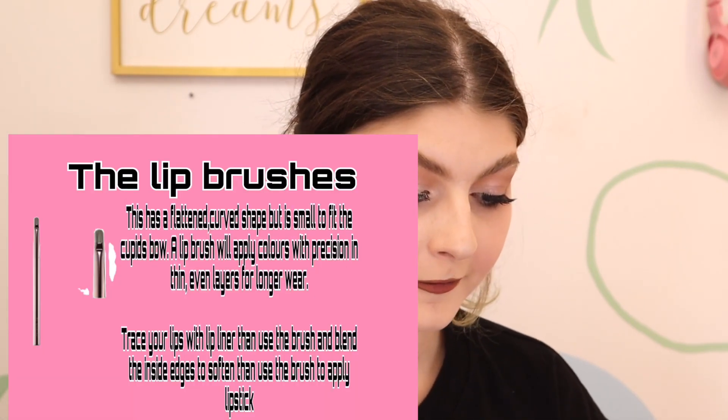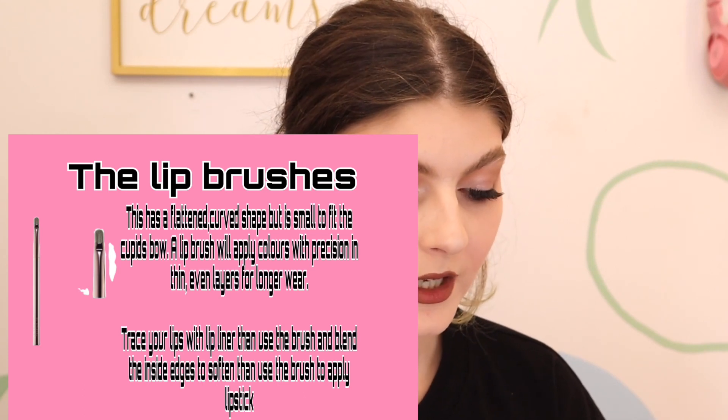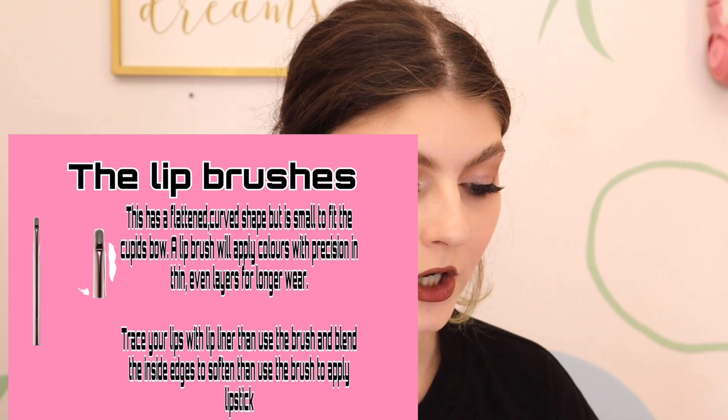The lip brush has a flattened, curved shape but is small to fit the cupid's bow. A lip brush applies color with precision and in thin, even layers for longer wear. Trace your lips with lip liner, then use this brush to blend the inside edges to soften, and then apply the lipstick all over. This is really good if you're doing clients — do your lip liner, bring that brush all down smudging it, then use the same brush to apply the lipstick.